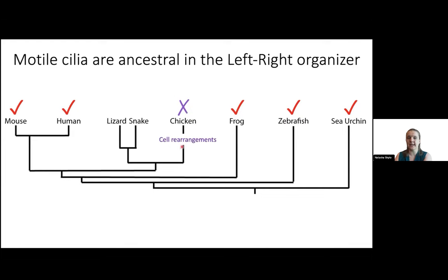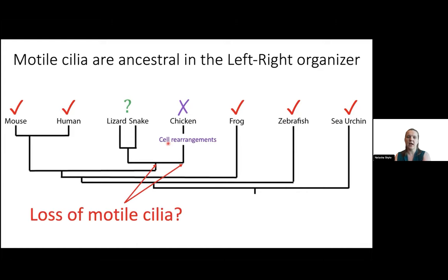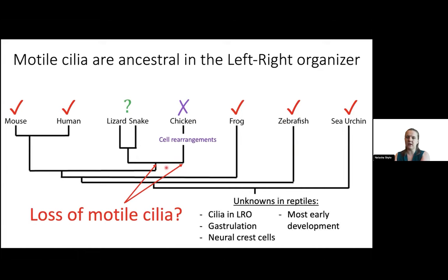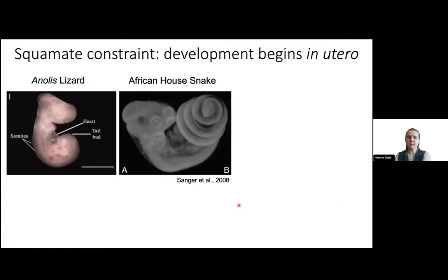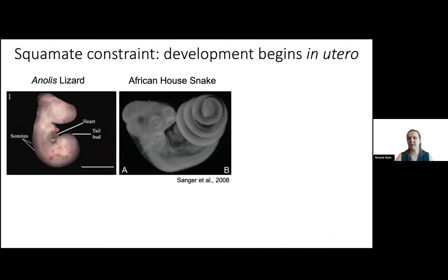For a long time, we had no idea what happens in other reptiles like lizards and snakes — whether the loss of motile cilia in the left-right organizer was something that only occurred in birds or was common to all reptiles. We know very little about reptile development in general: gastrulation, neural crest cell migration. Why? Because when squamates — lizards and snakes — lay their eggs, the embryo is already pretty advanced, with a head, somites, a beating heart, often limbs already formed.